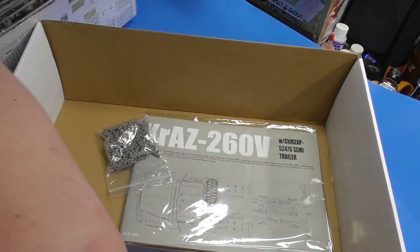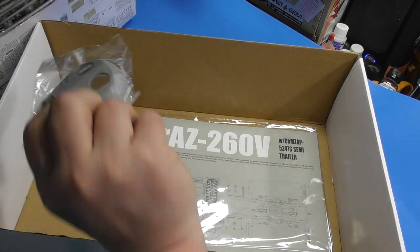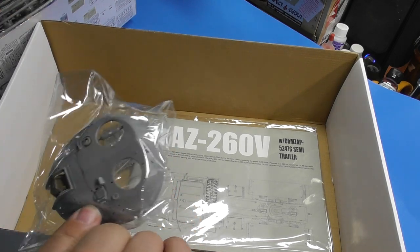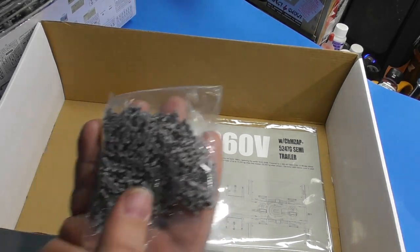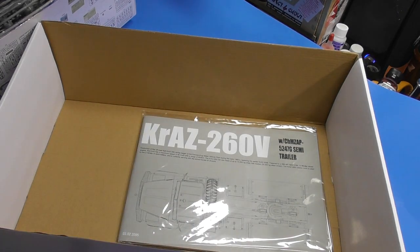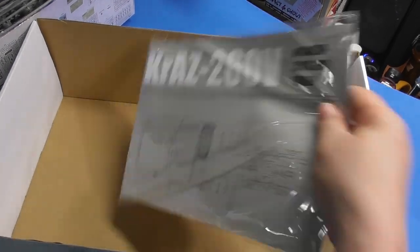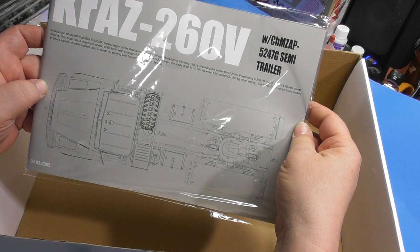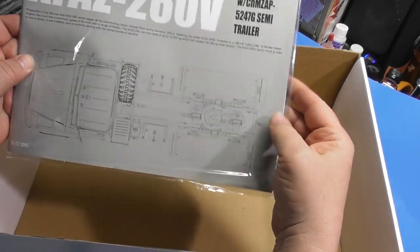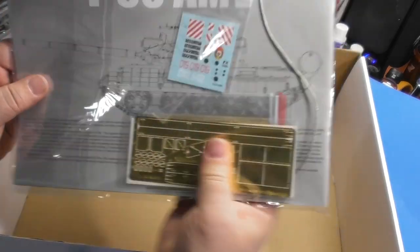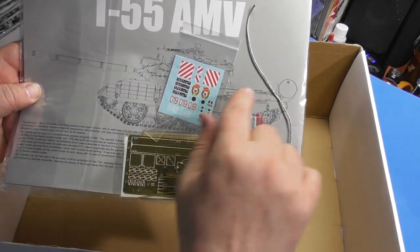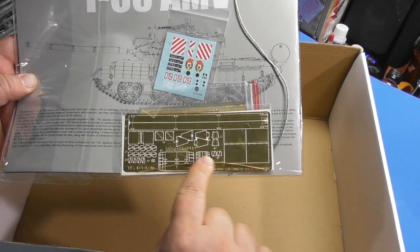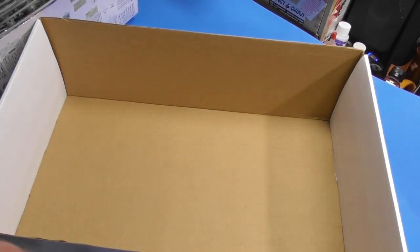Two bags of tires. One top of the turret. One set of track links. Hey, at least you don't have to clean them up probably. One instruction book for the semi-trailer and one instruction book for the tank. Three frets of PE, decals, metal cable, and I'm guessing this is the fuel line.